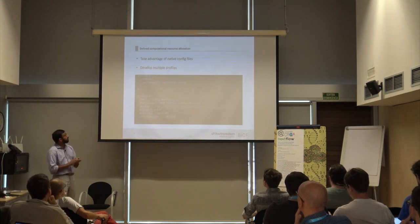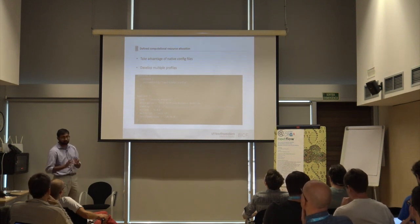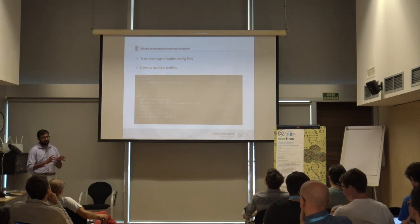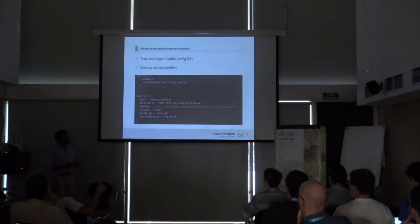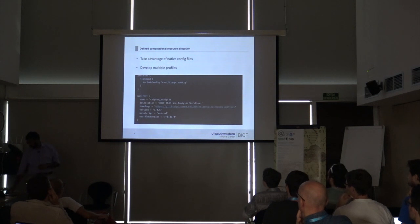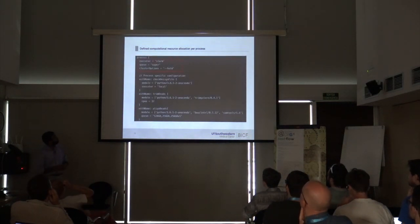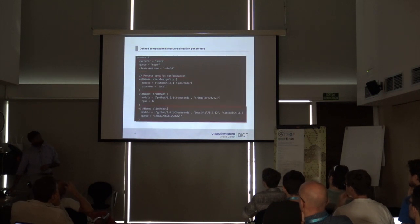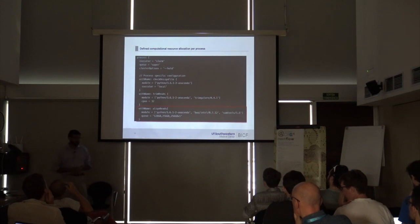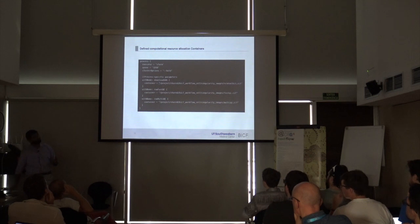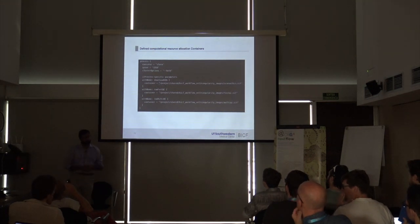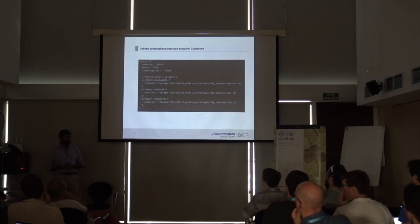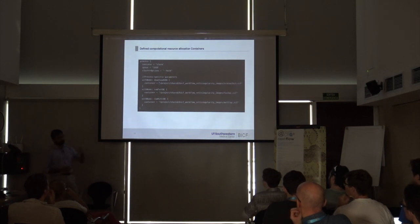To define computational resources, we used native config files and took advantage of what the Nextflow core community was doing with staging profiles via HPC config. We developed multiple profiles — first for our HPC, using the with-name function to define CPUs and queuing strategy — and then converted each process name into a particular container. We containerized every single process, so any software needed for a given process got its own container. This is a little different from doing one container for the whole pipeline, but it will allow us to move to a more modular system much more easily.